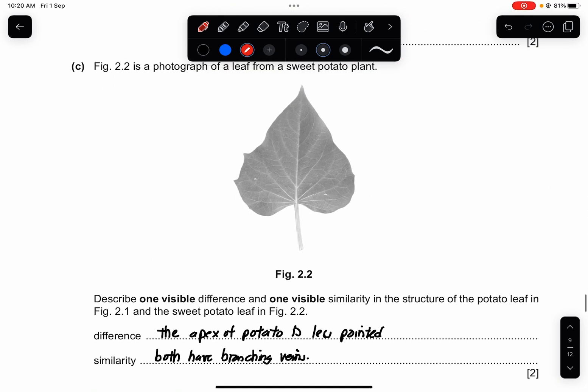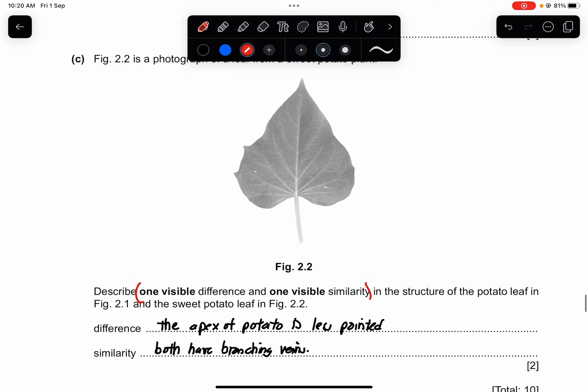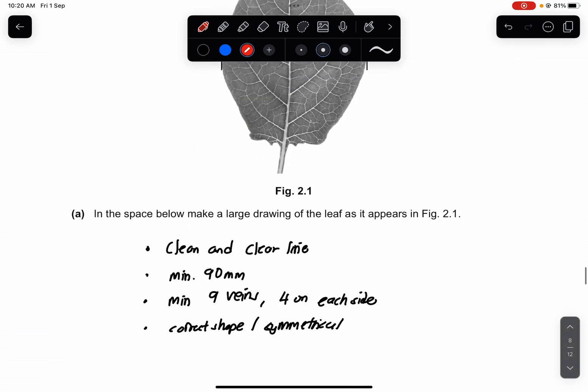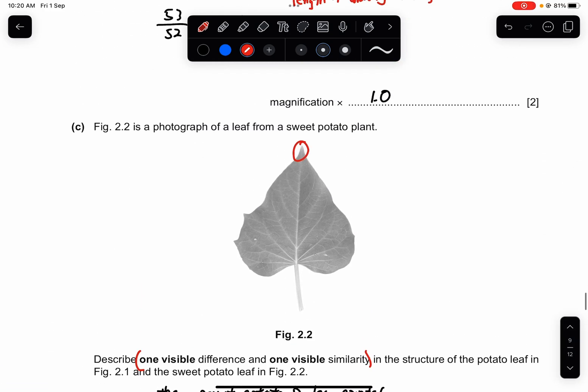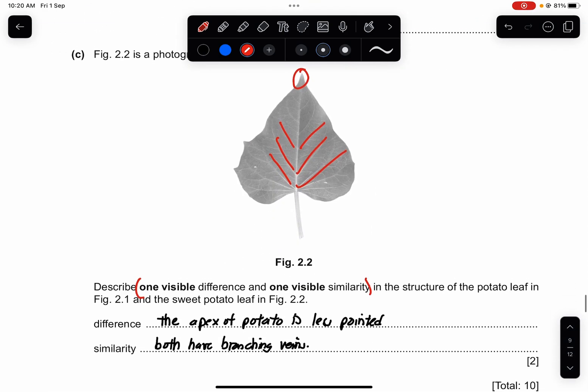Part C. Figure 2.2 is a photograph of the leaf from a sweet potato plant. Describe 1 visible difference and 1 visible similarity in the structure of a potato leaf in figure 2.1 and the sweet potato leaf in figure 2.2. So the answer is not fixed. The difference would be the apex of the potato is less pointed comparing to this. This is much more flat and this is much more sharper or pointy. And the similarity is that both have branching veins. You can see there's both branching. You can see there's branching, branching, branching, branching. So that's the similarity.